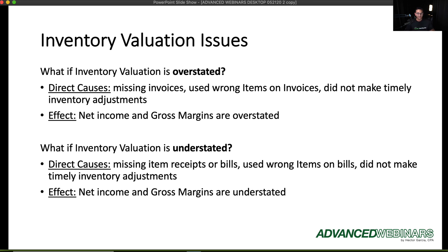Overstated inventory means your net income and gross margins are also overstated. The most obvious negative effect is paying more income taxes. Overstated gross margins can lead to overconfident salespeople giving more discounts or being too aggressive in pricing, which could result in losing money on deals. While overstated values might attract investors or lenders, the net negative effects are worse.